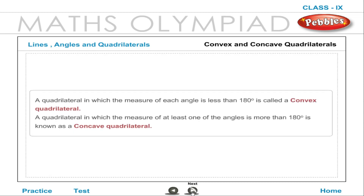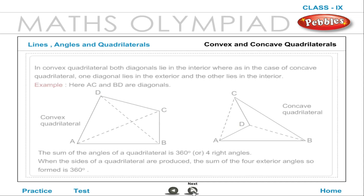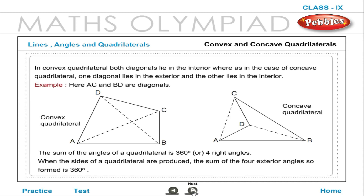A quadrilateral in which the measure of each angle is less than 180 degrees is called a convex quadrilateral. A quadrilateral in which the measure of at least one angle is more than 180 degrees is called a concave quadrilateral. In a convex quadrilateral, both diagonals lie in the interior, whereas in a concave quadrilateral, one diagonal lies in the exterior and the other in the interior.